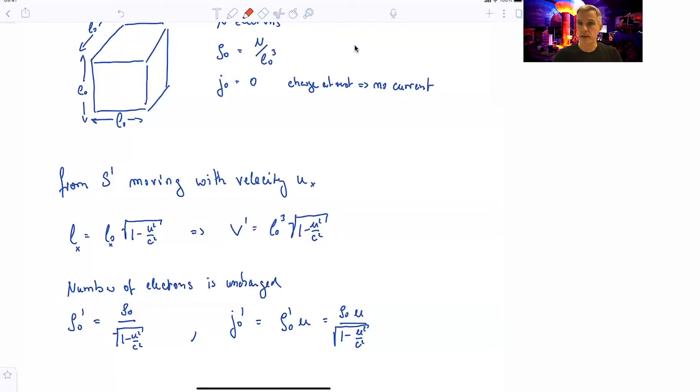For the new current density, we simply have to multiply the charge density times the velocity. And again, we find rho naught times u times gamma.